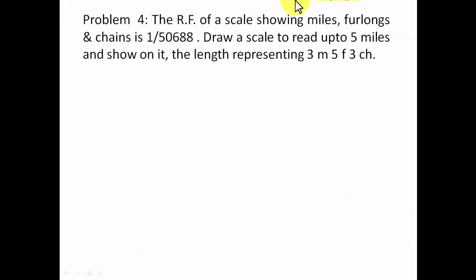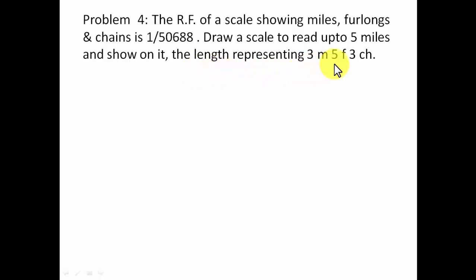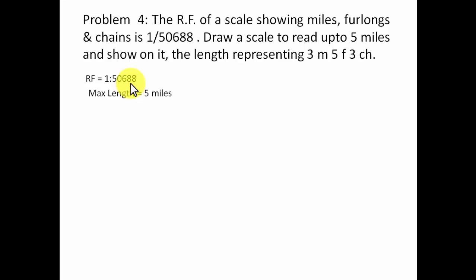The question is: the RF of a scale showing miles, furlongs, and chains is 1/506880. Draw a scale to read up to five miles and show on it the length representing 3M, 5F, and 3CH — that is, three miles, five furlongs, and three chains. We have the representative fraction 1/506880 and a maximum length of five miles.